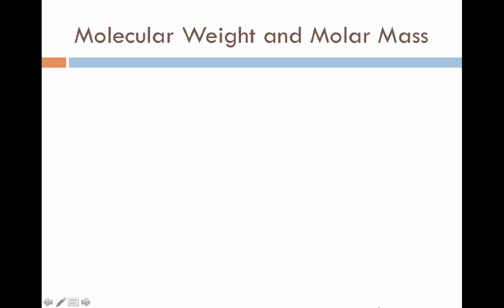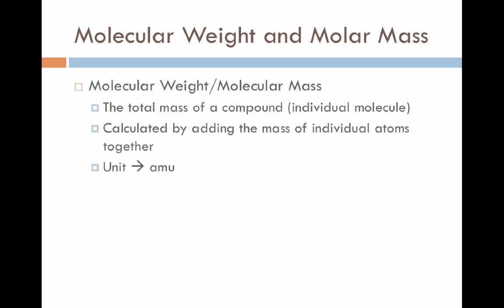Okay, so that is a great way to talk about the masses of individual atoms. We also need to be able to talk about the masses of entire compounds, substances that are made up of many atoms at once. And we've already talked about that in the year in terms of things like molecular weights and molecular masses. And these were the total masses of the compound, individual molecules, and they were calculated by adding the masses of the individual atoms together.